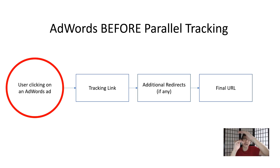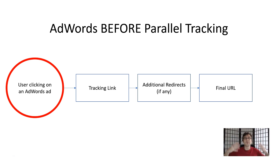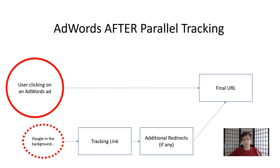Google says this takes away from the customer experience, because it takes a long time to get to what they clicked on. So before, you'd have your tracking link in Google and your final URL, but no one would ever use the final URL except for Google to verify that it matched the final ending website. That was the only reason you'd input the final URL if you were using tracking — otherwise you'd only use the tracking template.